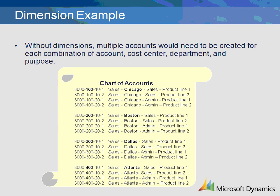Using our previous example, we would need to create 16 General Ledger accounts instead of one. For Account 3000, we have an account that represents each location — Chicago, Boston, Dallas, and Atlanta. Within each location, we have an account for each department, Sales or Admin. And finally, within each department, we have an account for the purpose, Product Line 1 and Product Line 2.